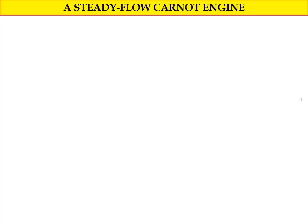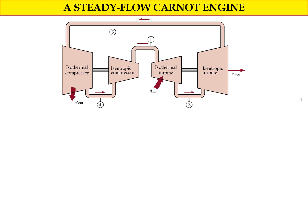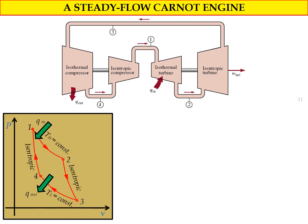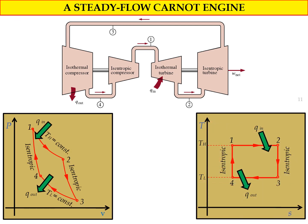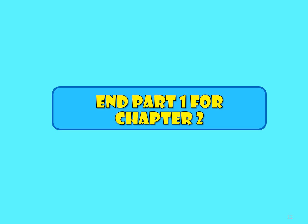The Carnot cycle can also be utilized in a steady flow system using two turbines and two compressors, as shown in the figure. From the four states — 1, 2, 3, and 4 — we can plot the PV and TS diagrams as the Carnot cycle system. This is the end of Part 1 for Chapter 2. Thank you for your attention and hopefully you enjoyed the video.